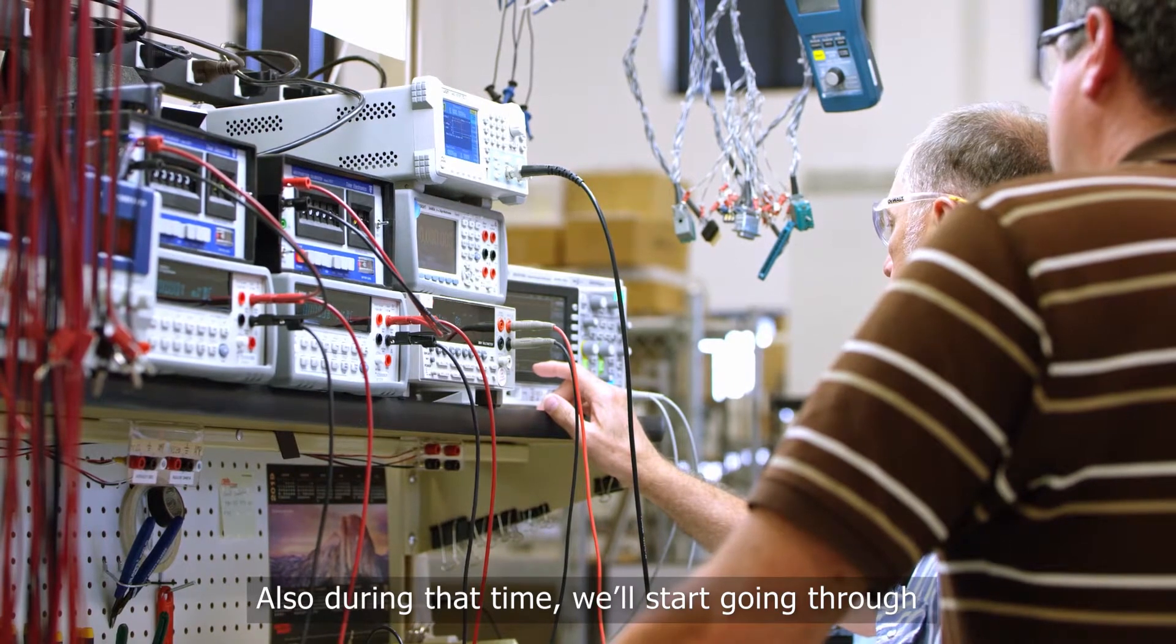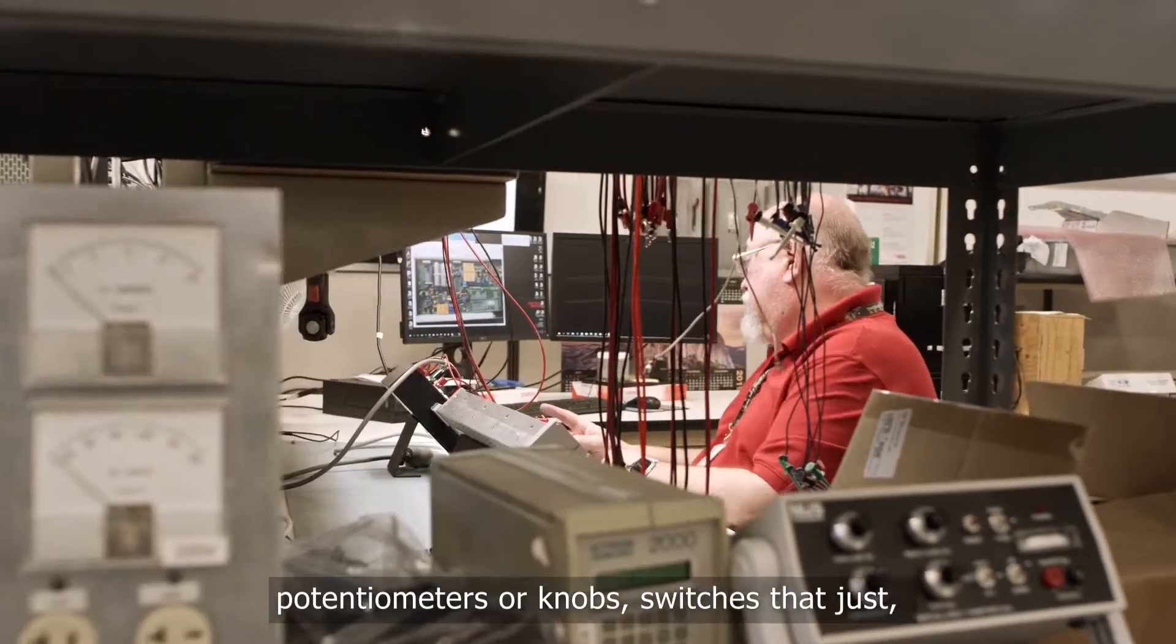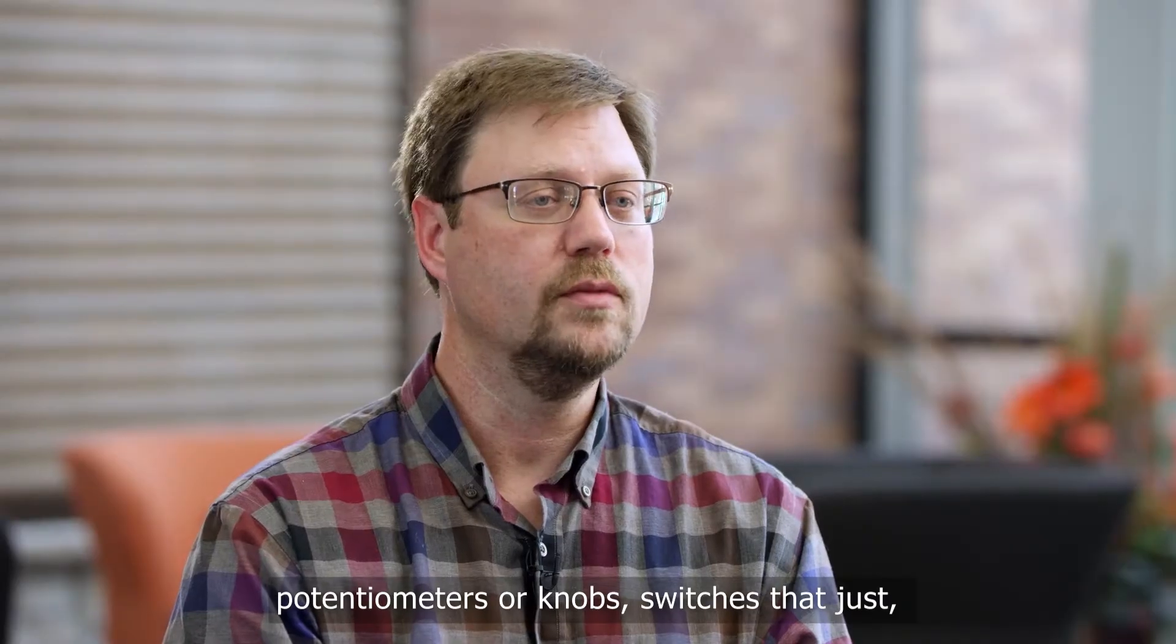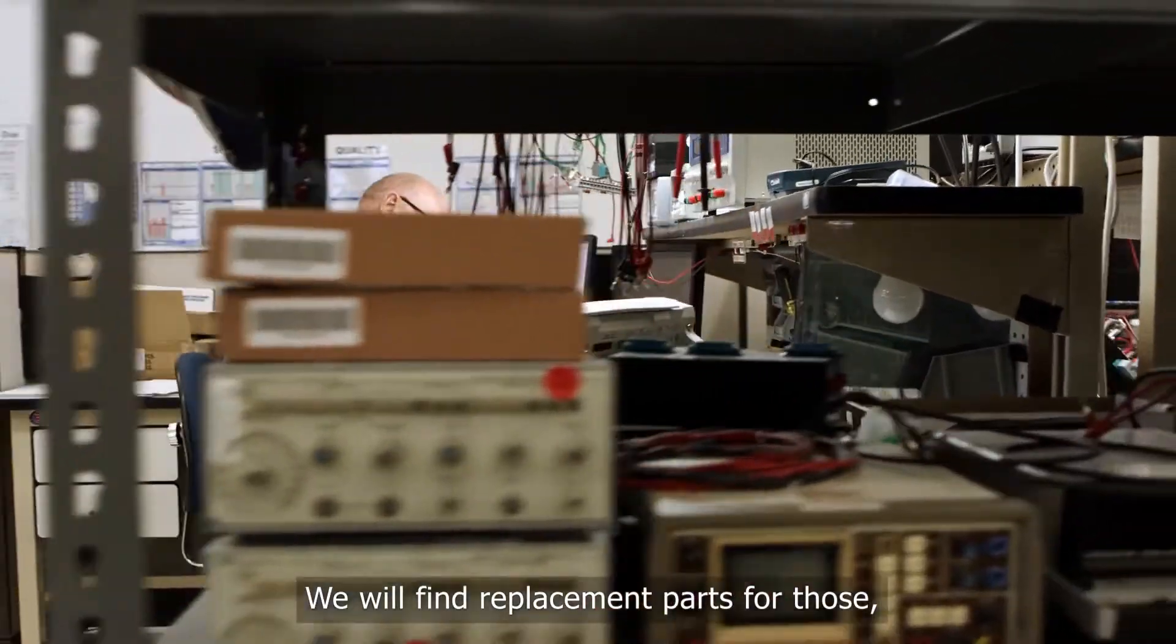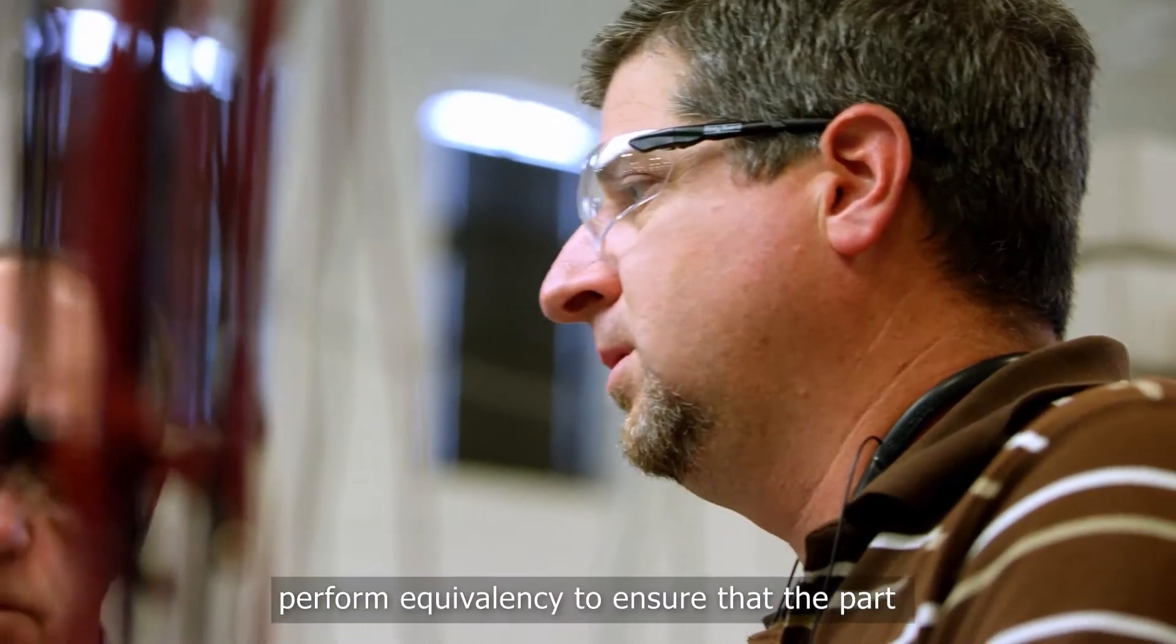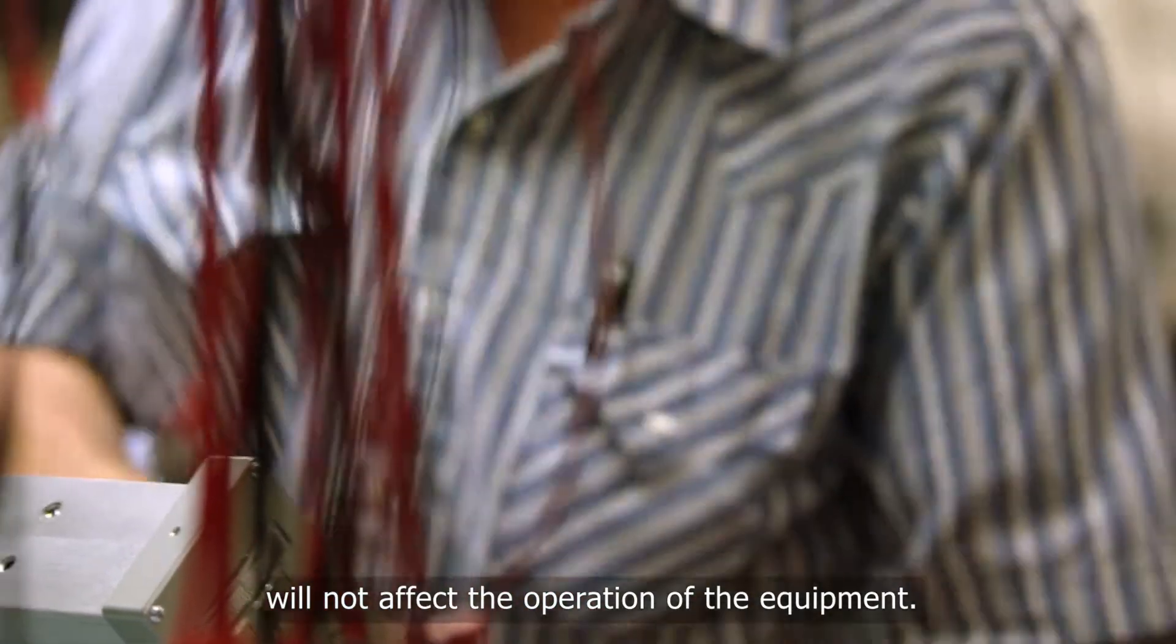Also during that time, we'll start going through and looking for age-sensitive components, equipment that may degrade over time—potentiometers or knobs, switches that just lifetime has been exceeded. We will find replacement parts for those, perform an equivalency to ensure that the part will not affect the operation of the equipment.